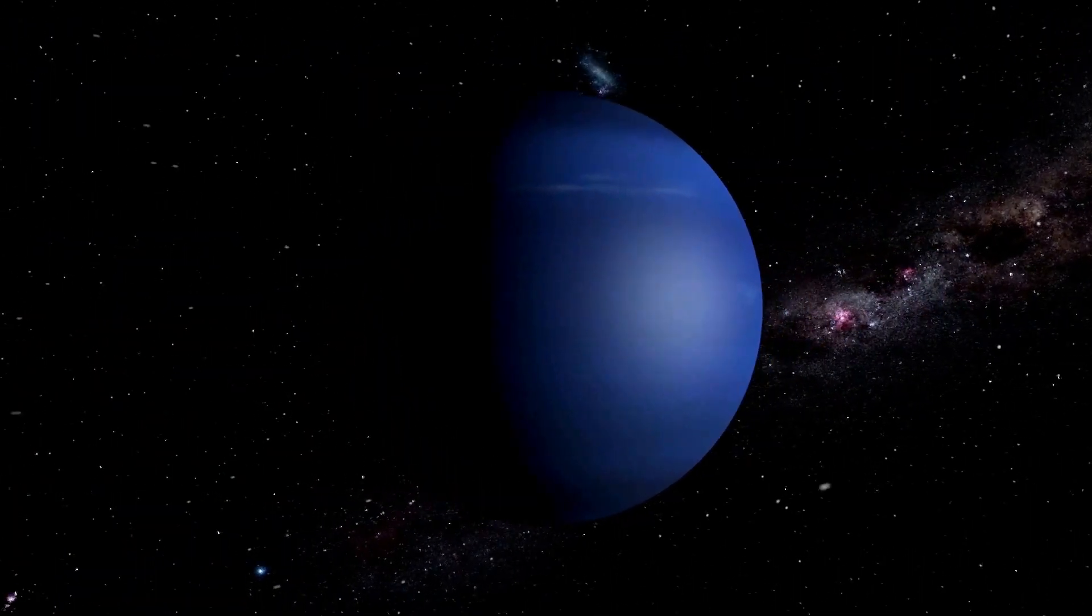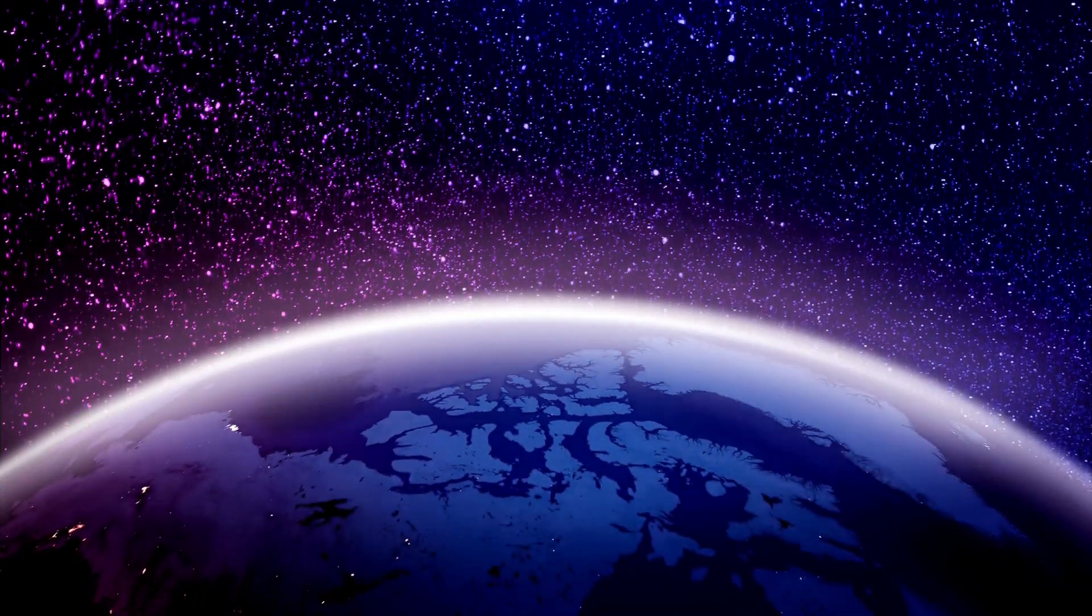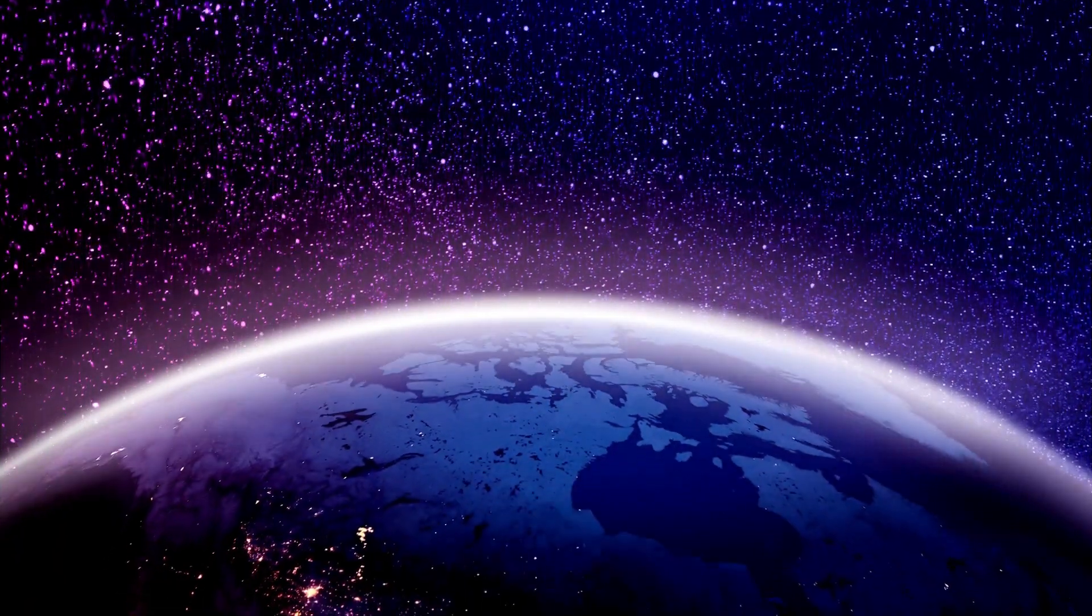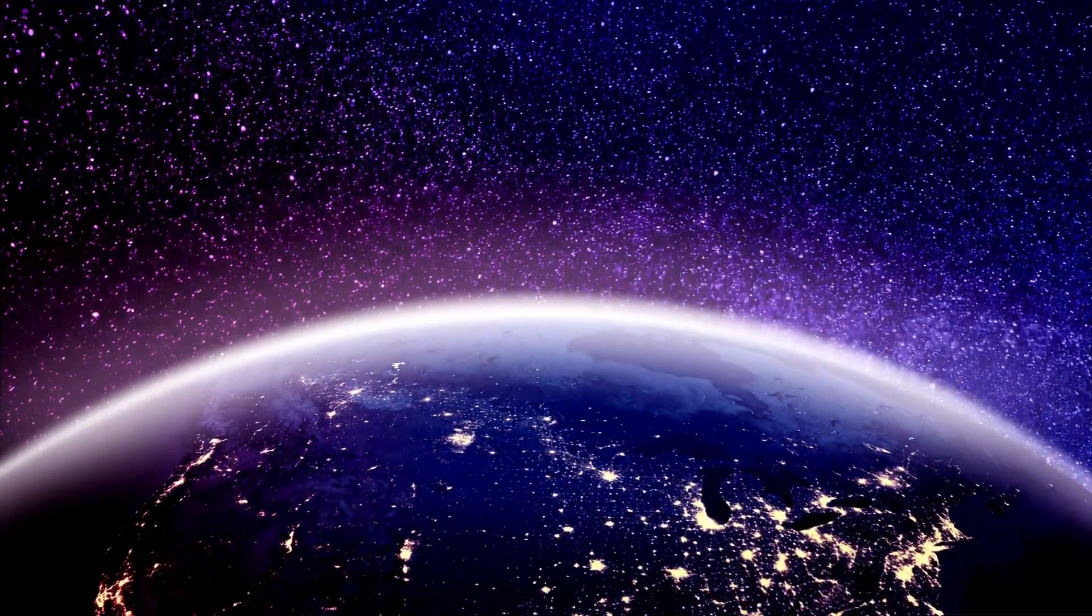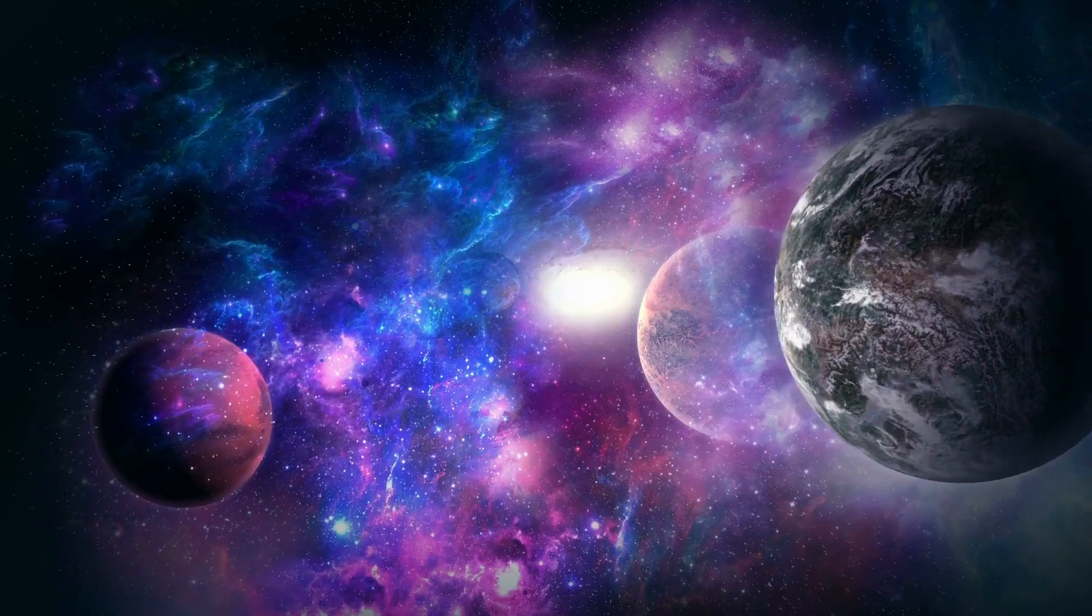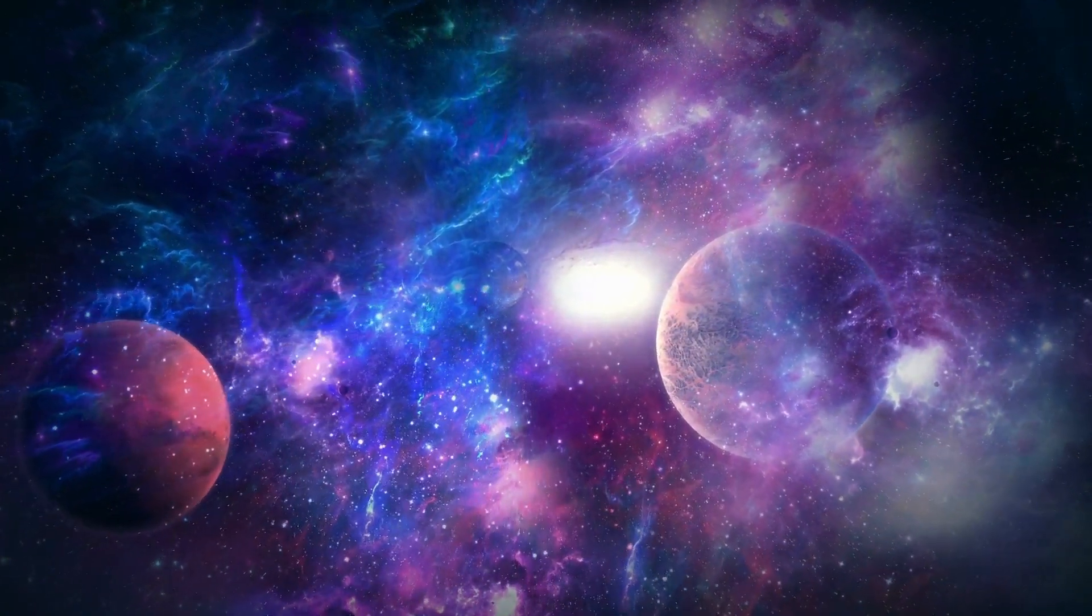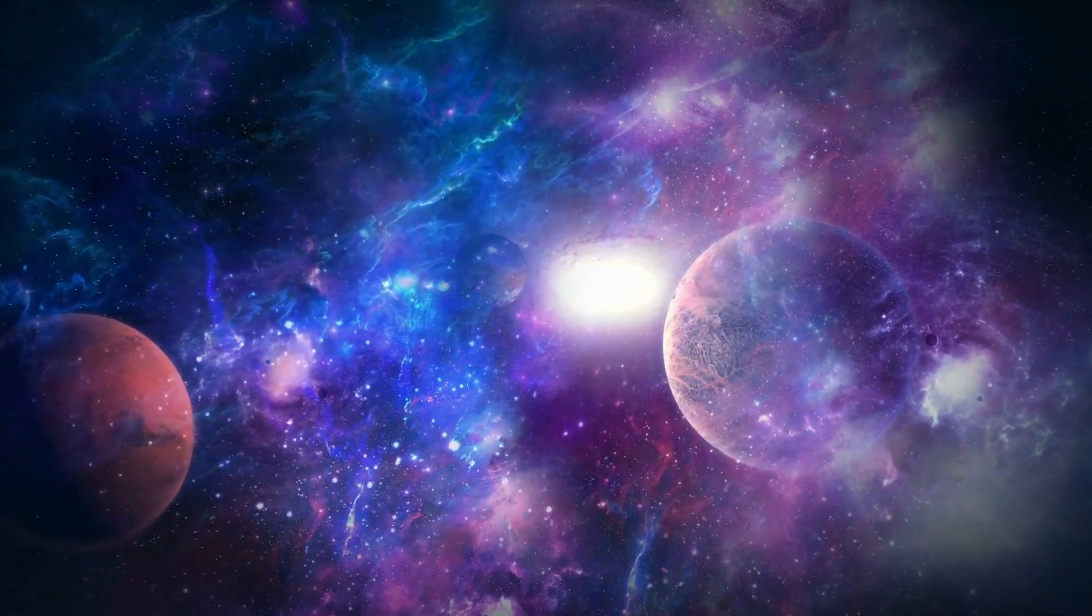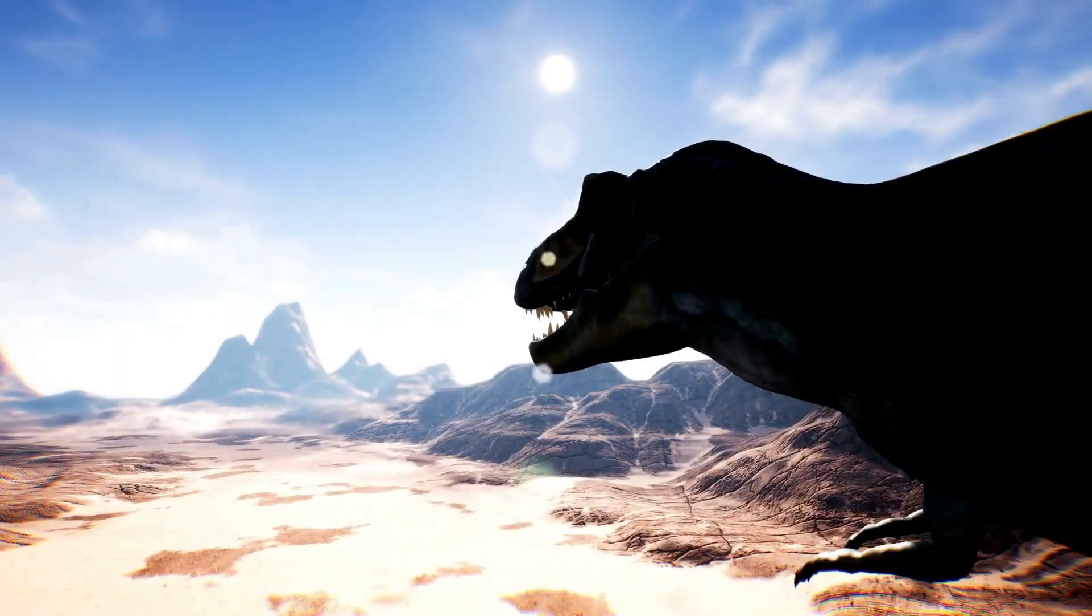Our closest stellar neighbor is Proxima Centauri, and there's a planet orbiting it called Proxima B. It is very similar to Earth, and it might even host aliens. If they were to look into Earth with a giant telescope, they'd see what happened on Earth 4 years ago. But even this is so tiny a distance when compared to our universe. There are planets like Earth hundreds or thousands of light years away. And if you were to look at Earth with a massive telescope from there, you could even see dinosaurs.